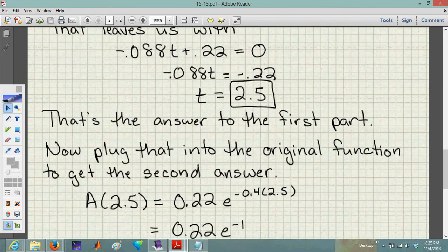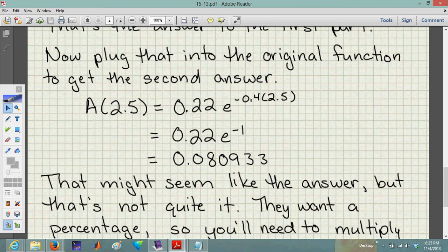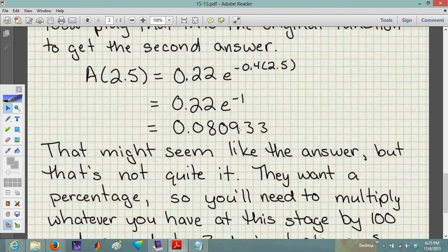So what do we do with that? We plug that into the original function to get the second answer. So not into the derivative, but the original function, you're going to plug in 2.5. So you're going to have 0.22 times 2.5 times e to the negative 0.4 times 2.5. And if you work that out, you're going to get a decimal answer that's going to look something like this. And you're going to be like, I've got the answer. No, you don't. Stop.